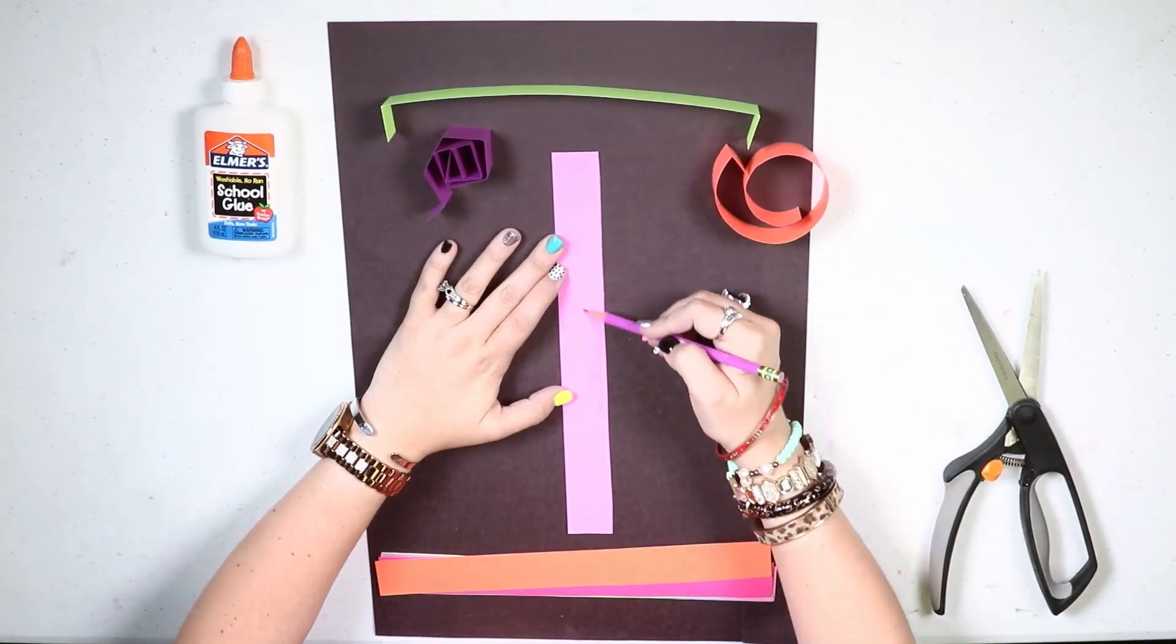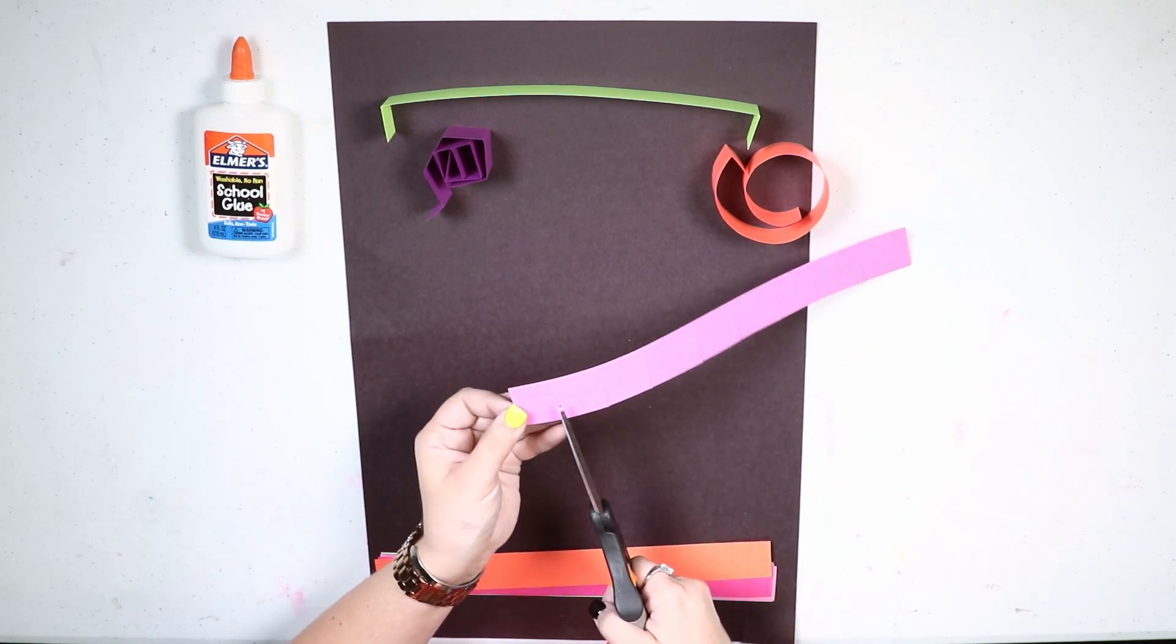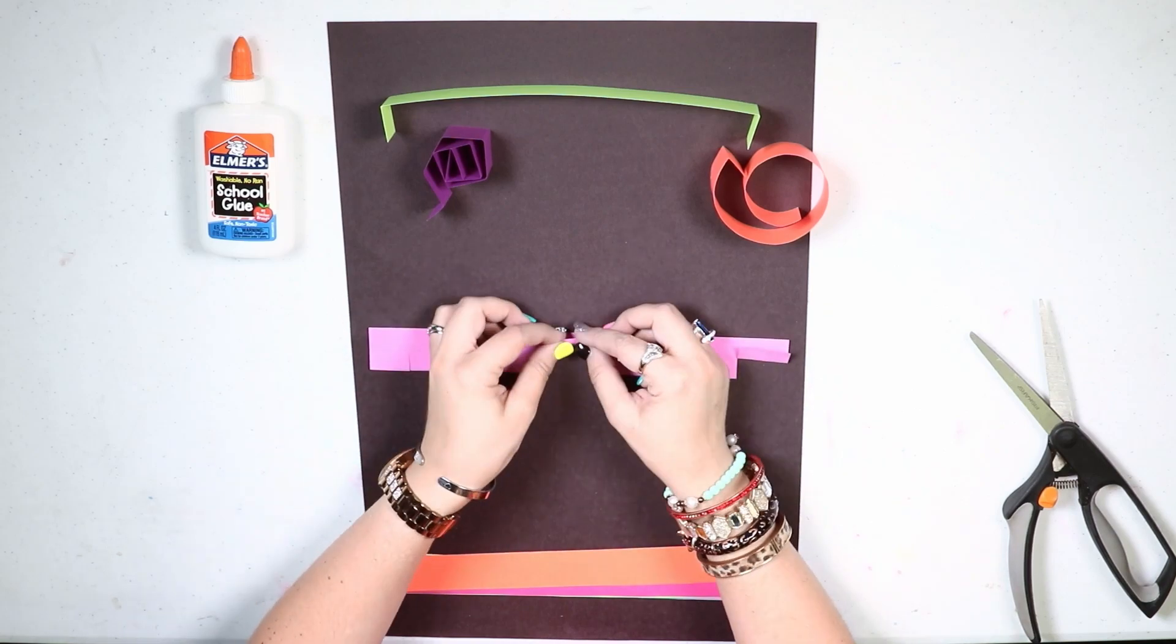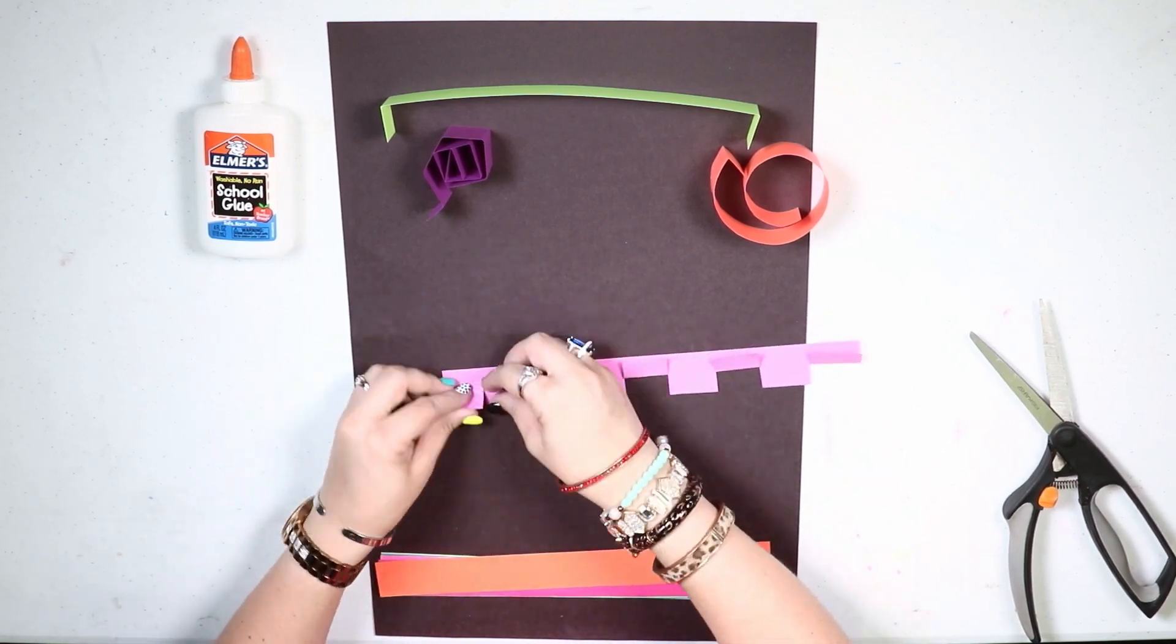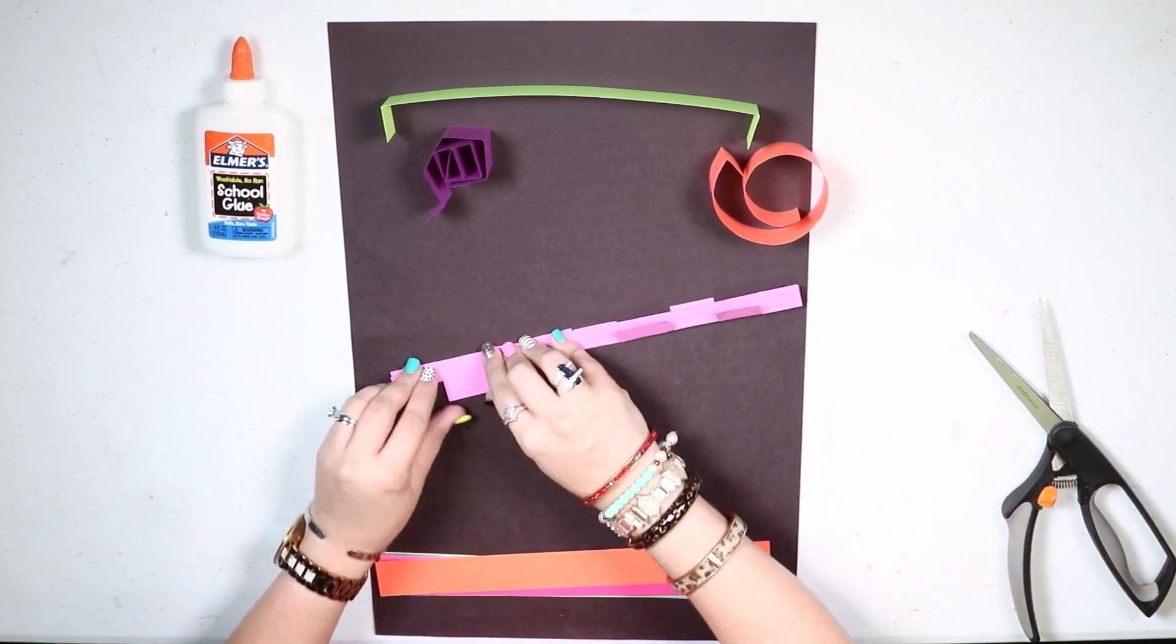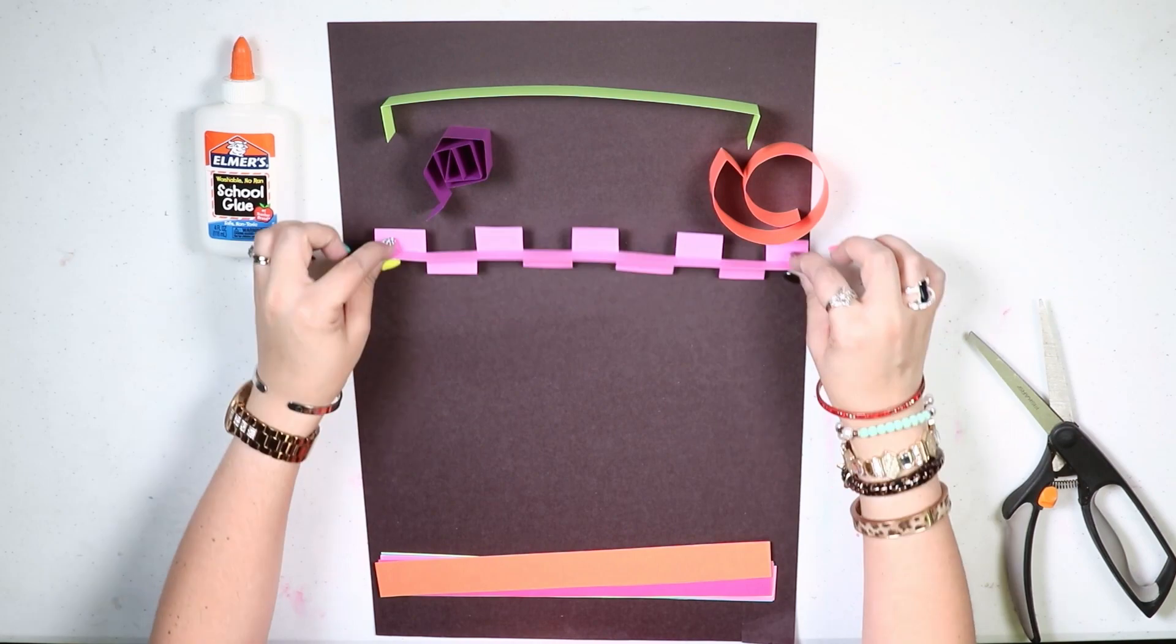This next one I draw a line down the middle vertically and then I just cut little lines all the way to that middle line and then I'm folding every other square up and then I'm going to flip it over and fold those squares up. Then you hold it straight up and you can fold those squares down and it creates a checkerboard look.